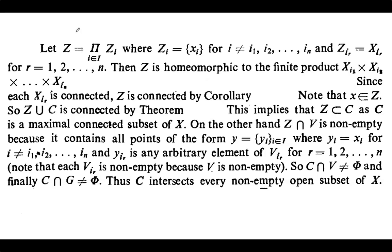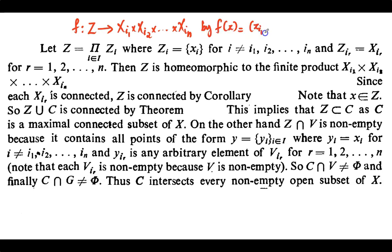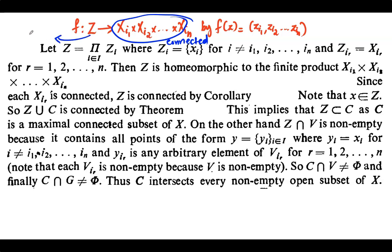Define a homeomorphism from Z to this finite product by f(z) = (zi1, zi2, ..., zin), making Z homeomorphic to Xi1 × Xi2 × ... × Xin. Since each Xir is connected, the finite product Xi1 × ... × Xin is connected. Since Z and this finite product are homeomorphic, Z is also connected by a previous corollary.